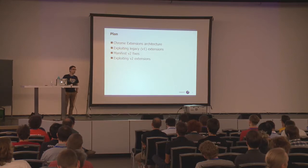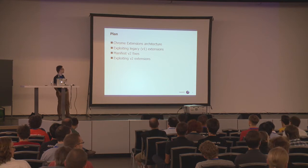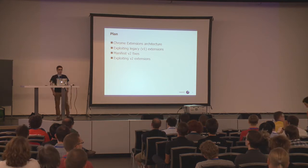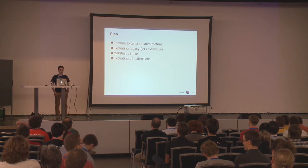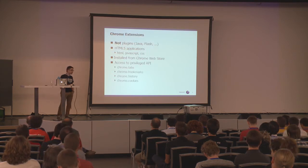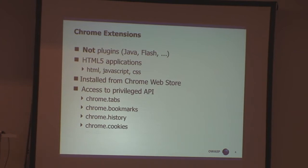What were the changes in the security model, and the most interesting part of the talk is how to still exploit Google Chrome extensions which are up to date with security features. Chrome extensions are not Java plugins or Flash plugins — these are just HTML5 applications distributed by the Chrome Web Store, and they are really interesting from a research point of view because they get access to a highly privileged API.